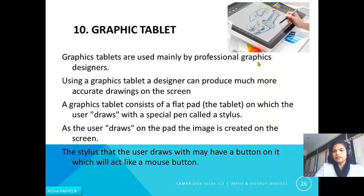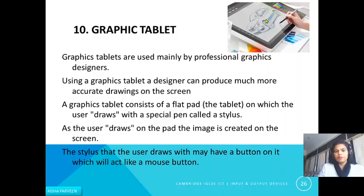The next input device is the graphic tablet. Graphic tablets are used mainly by professional graphic designers. Using a graphic tablet, a designer can produce much more accurate drawings on the screen. It consists of a flat pad on which the user draws with a special pen called a stylus. As the user draws on the pad, the image is created on the screen. The stylus may have a button on it which acts like a mouse button. After drawing, the image can be converted to an editable form and edited using software. These are all the manual input devices.